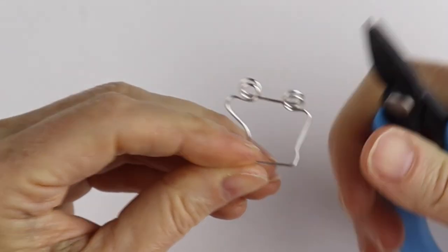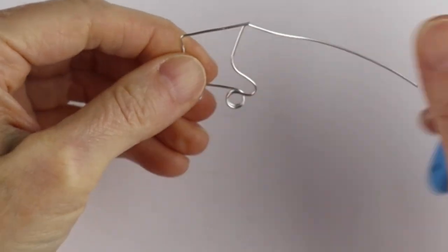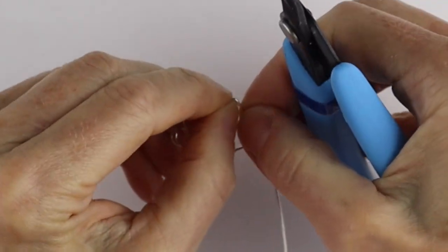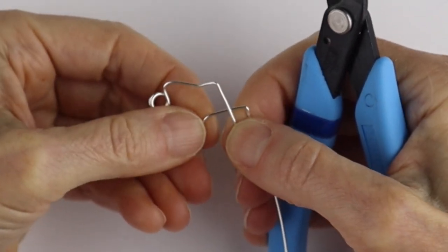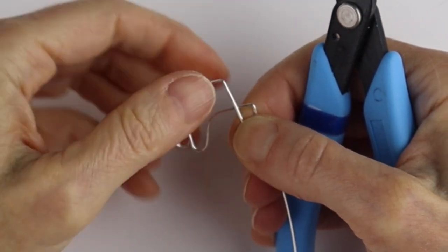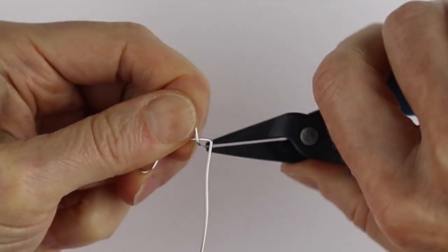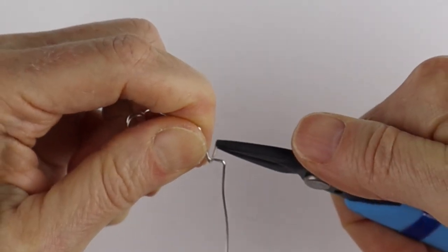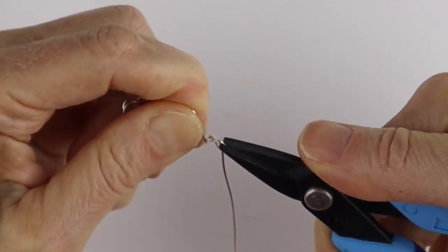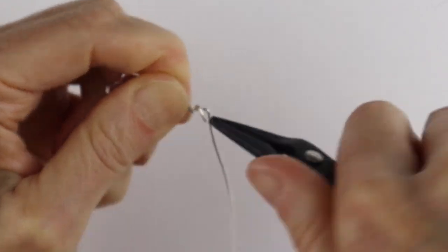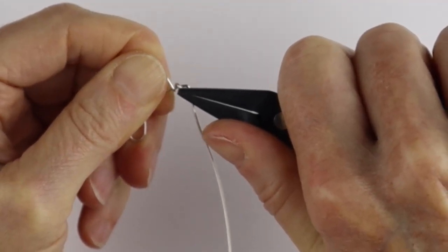And then we're going to wind this one around the top. Just place this one in the position, the width that you want, hold it in place, and then just bend it around. So around and then around again. We're going to leave a little bit of space in between these two here.